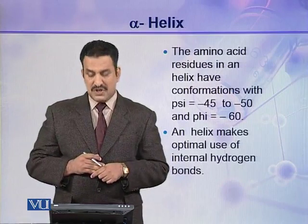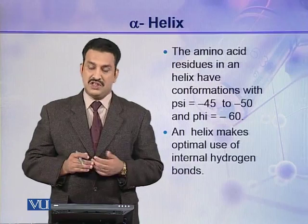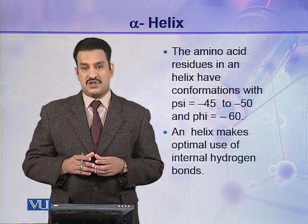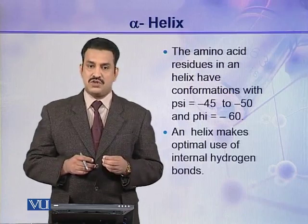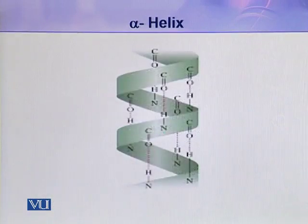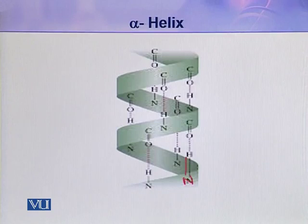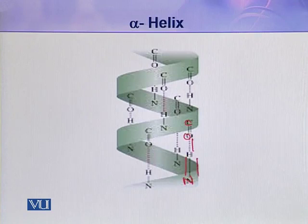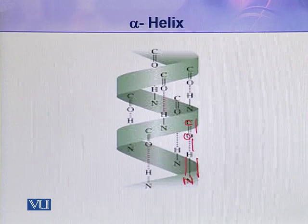The helix makes optimal use of internal hydrogen bonds, and by using the maximum potential of hydrogen bonding, this structure becomes very stable. Almost all the amino acids are hydrogen bonded with some other amino acids. As you can see in the picture, the nitrogen contains a hydrogen attached to it, and oxygen is attached to a carbon. A hydrogen bond is established between the amide hydrogen and the carbonyl oxygen, linking two amino acids together through hydrogen bonding.